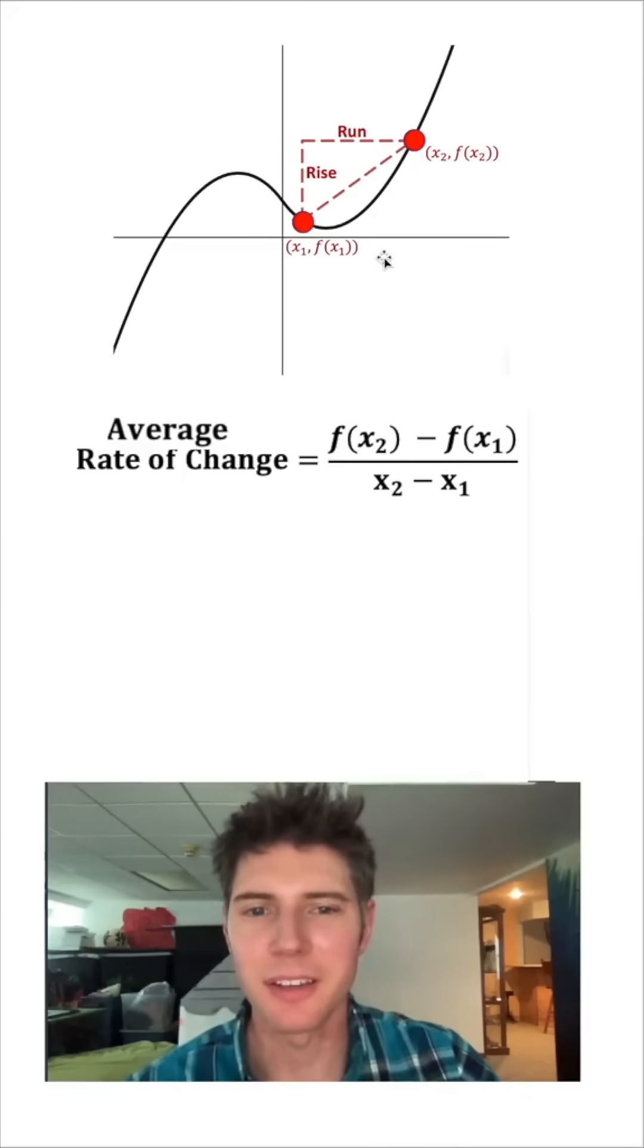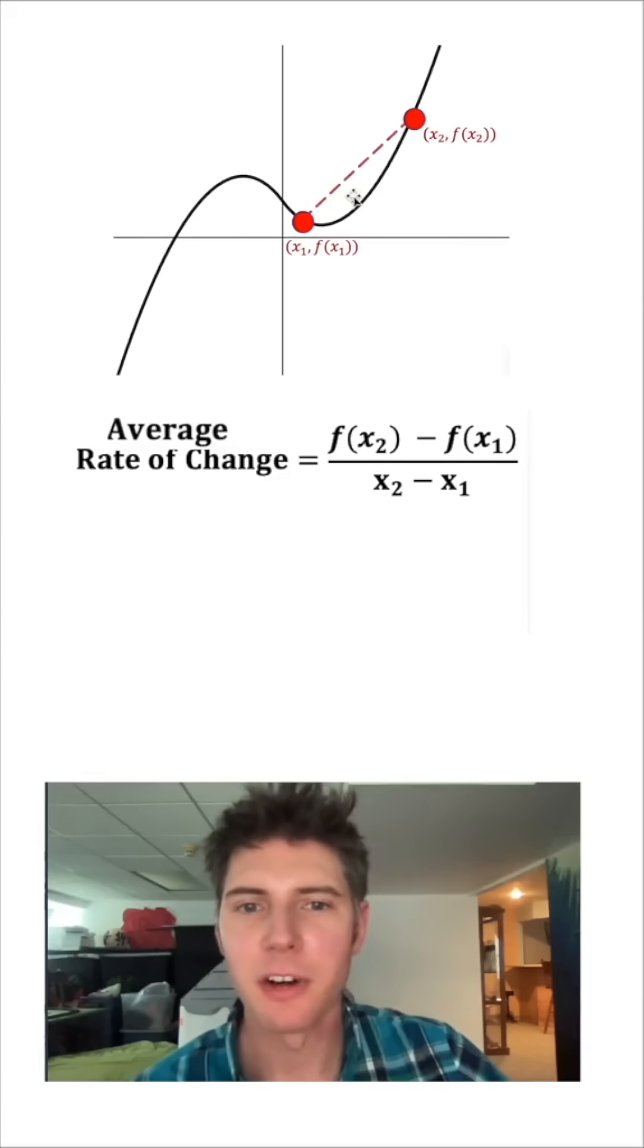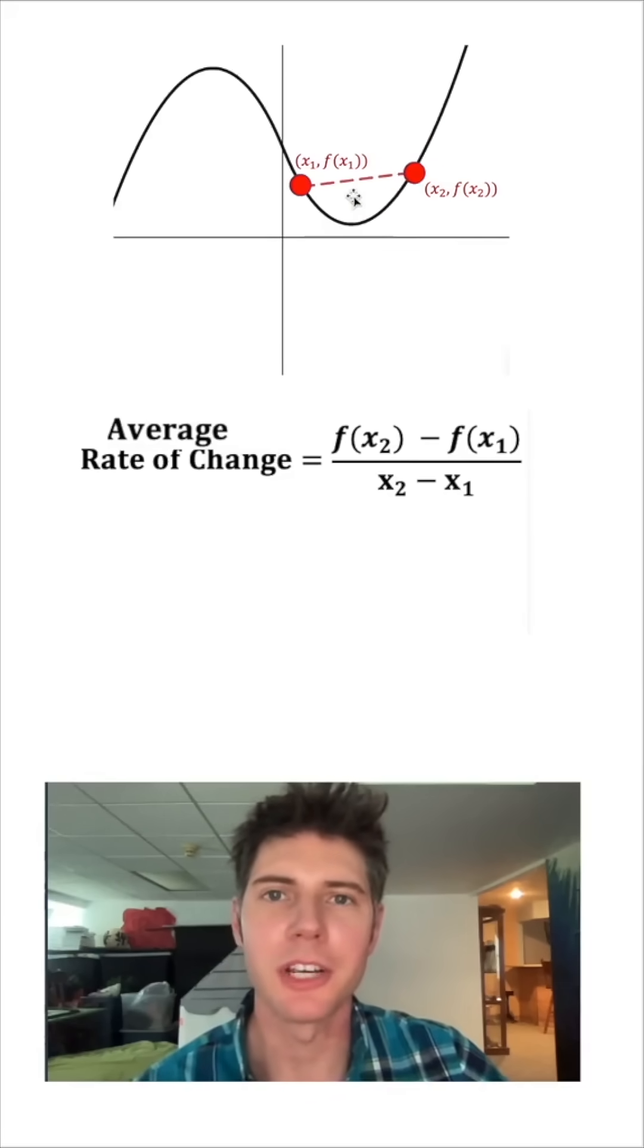So let's look at it this way. Let's connect our two points, get rid of the rise over run. The slope of this segment is gonna be our average rate of change. And as the graph changes, you can see that this average rate of change will also change.